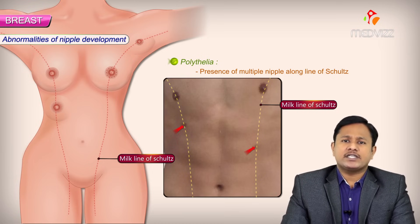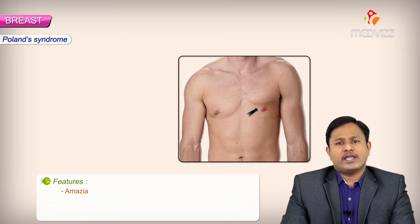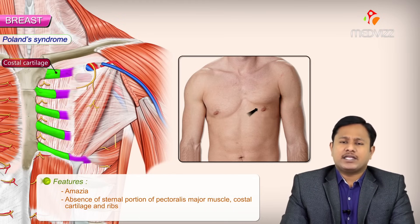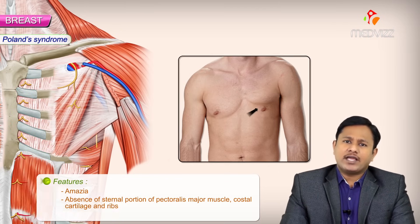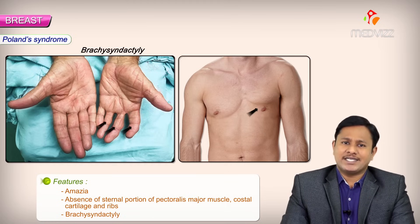There are some syndromes associated with congenital disorders where the breast is absent. The most important is Poland syndrome. Poland syndrome consists of amazia — absence of breast tissue — along with absence of the sternal portion of the pectoralis major muscle, absence of the costal cartilage and ribs, and brachysyndactyly, where the patients have short and stout fingers. The hemithorax is often completely deformed.